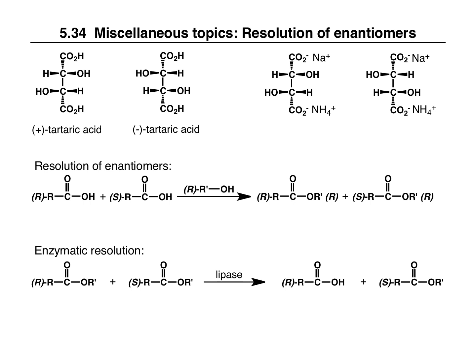So how else can enantiomers be separated? The resolution of enantiomers can be accomplished by changing enantiomers into diastereomers. For example, if we have an enantiomeric pair of carboxylic acids — carboxylic acids react with alcohols to form esters — if we use a chiral alcohol and use only a single enantiomer, when the R acid reacts with the R alcohol we form the RR ester, and when the S acid reacts with the R alcohol we get the SR ester. RR compared to SR is a pair of diastereomers, and diastereomers do not have the exact same properties.